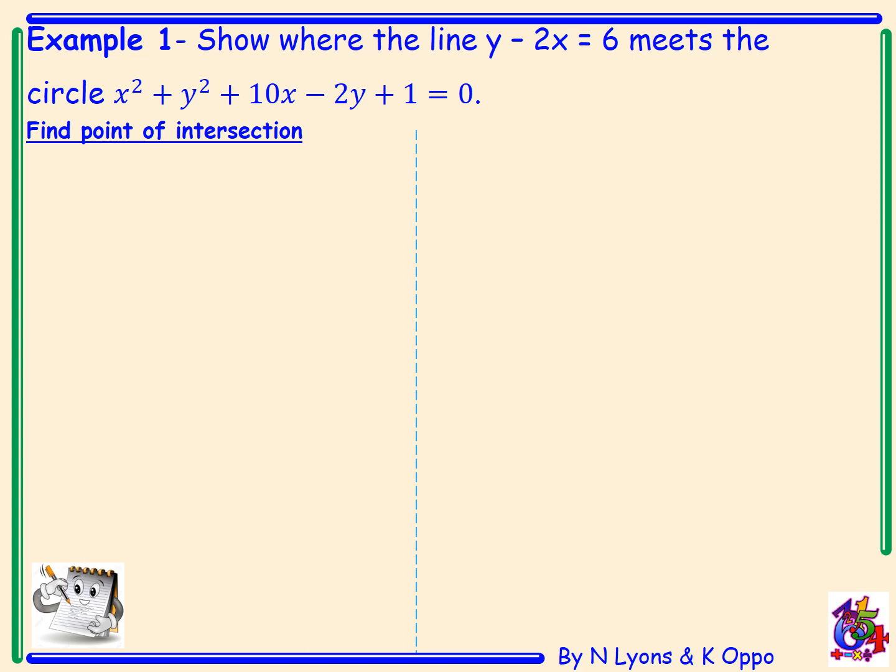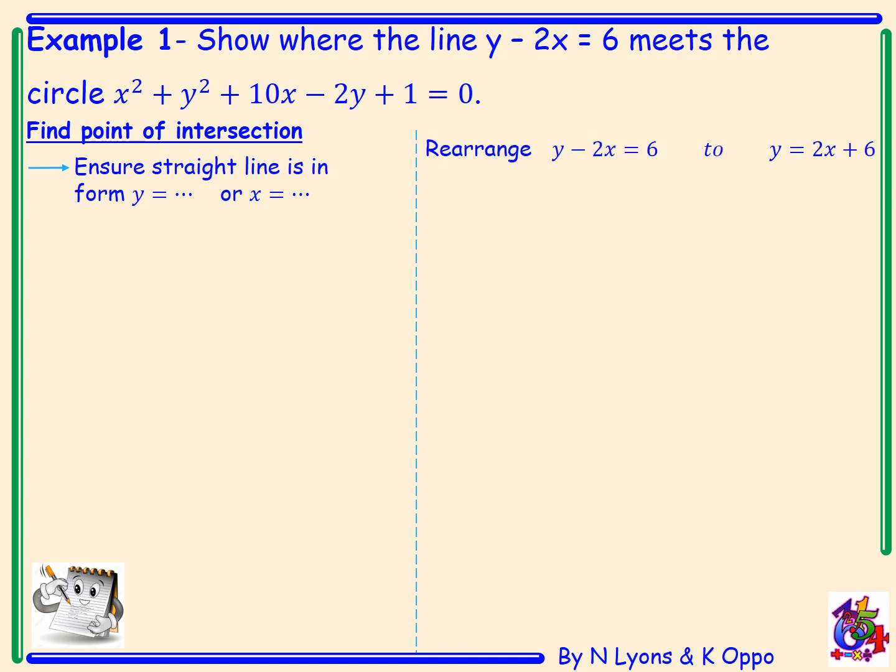Example 1: Show where the line y minus 2x equals 6 meets the circle x squared plus y squared plus 10x minus 2y plus 1 equals 0. To find the point of intersection, the first thing we need to do is make sure that our straight line is in the form y equals or x equals, because we are going to substitute x or y in our circle equation for our straight line. So we rearrange to get y equals 2x plus 6.